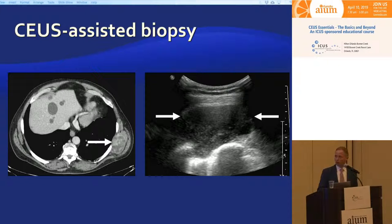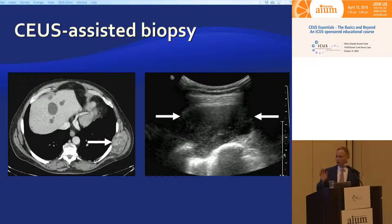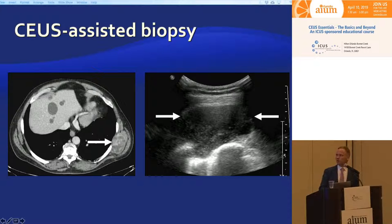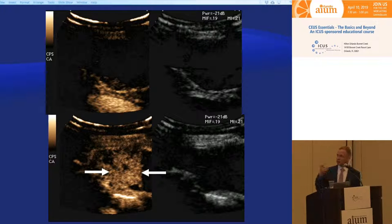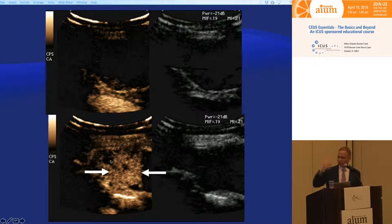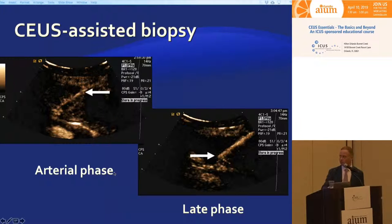Another patient with melanoma presented after being biopsied four times at three different hospitals with no tissue obtained. He had a giant, very necrotic tumor in his back, and on ultrasound it looked very heterogeneous with no idea where to place needles. We injected microbubbles — the majority of the tumor was completely dead with not a single microbubble entering. All the way at the inferior edge of the scapula there was a small area of persistent contrast enhancement. We stuck a needle in it and got malignant melanoma.